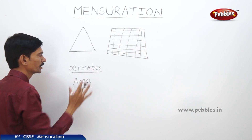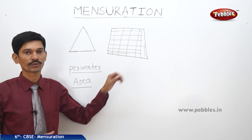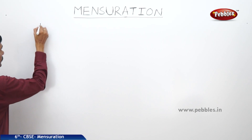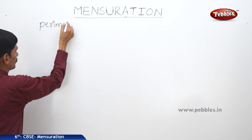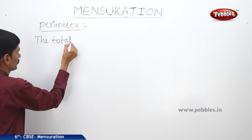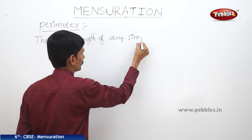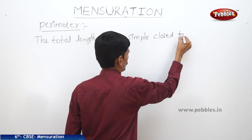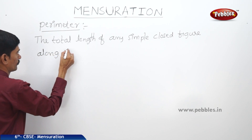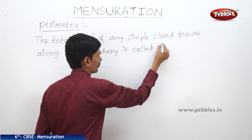First, let us learn about the perimeter of simple closed figures such as equilateral triangles, squares, rectangles, and some regular polygons. Then we will learn about the area of simple closed figures. The perimeter of any closed figure is the total length along its boundary.